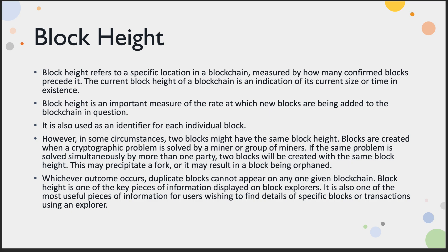Block height refers to the specific location in the blockchain — how many confirmed blocks preceded it. If your block height is 100, you're 100 blocks away from the Genesis block; if it's 17,000, you're 17,000 steps away. It's an important measure of the rate at which new blocks are being added to the blockchain and is also used as an identifier for each individual block, so you can see if blocks are missing.